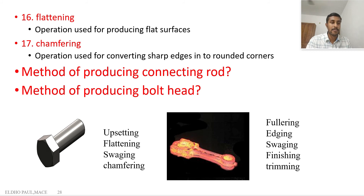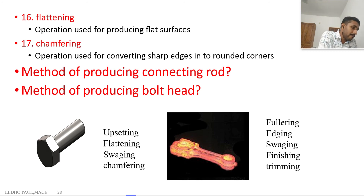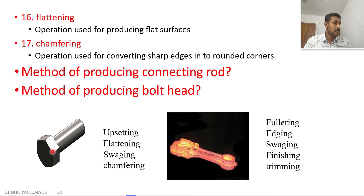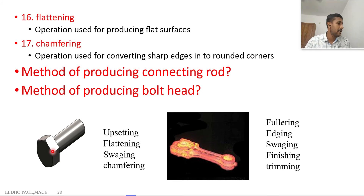The chamfering process is used to create a chamfer on the product — for example, on the tip of a bolt head we need a chamfer, so we use the chamfering process. These are the different operations; there are 17 operations studied in the forging area.